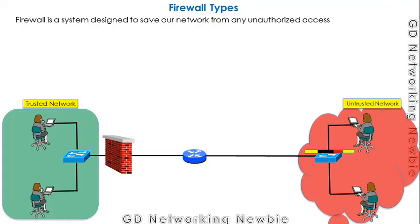In this video we are going to discuss firewall types. A firewall is basically a system that has been designed to protect our network from unauthorized access. There may be hackers trying to access our network. On the left-hand side we have a trusted network and an untrusted network, and a firewall — which can be hardware or software — is placed to protect our network from these unauthorized accesses.